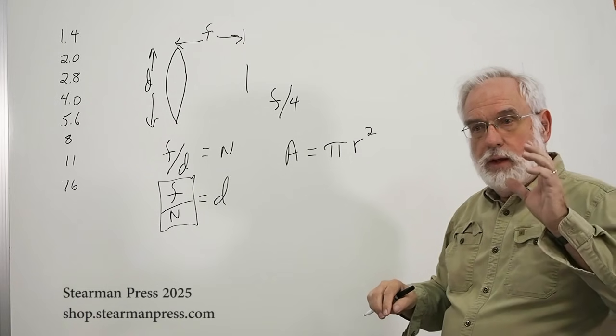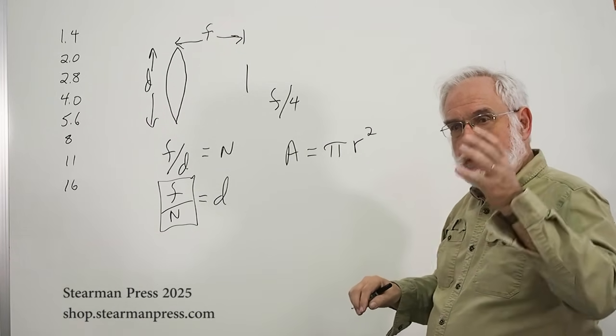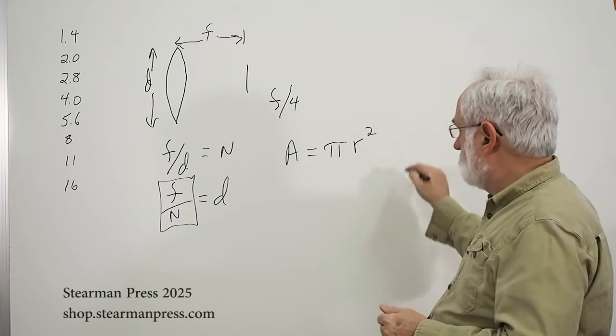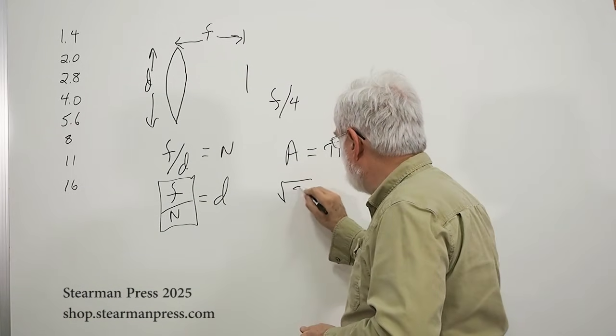But, basically, if you want to figure out, what is the next step? How do I get the next circle that's twice as big? And, you work through the math, what falls out of it all is the square root of two.